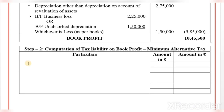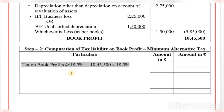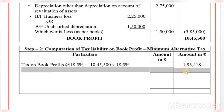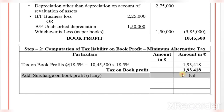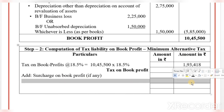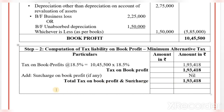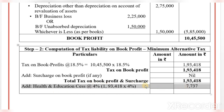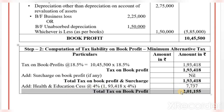Step four: calculate tax liability. Tax on book profit at 18.5 percent: 18.5% of Rs. 10,45,500 = Rs. 1,93,418. Add health and education cess at 4 percent: Rs. 7,737. Total tax on book profit (MAT liability): Rs. 2,01,155. This is the normal tax liability under Minimum Alternative Tax.